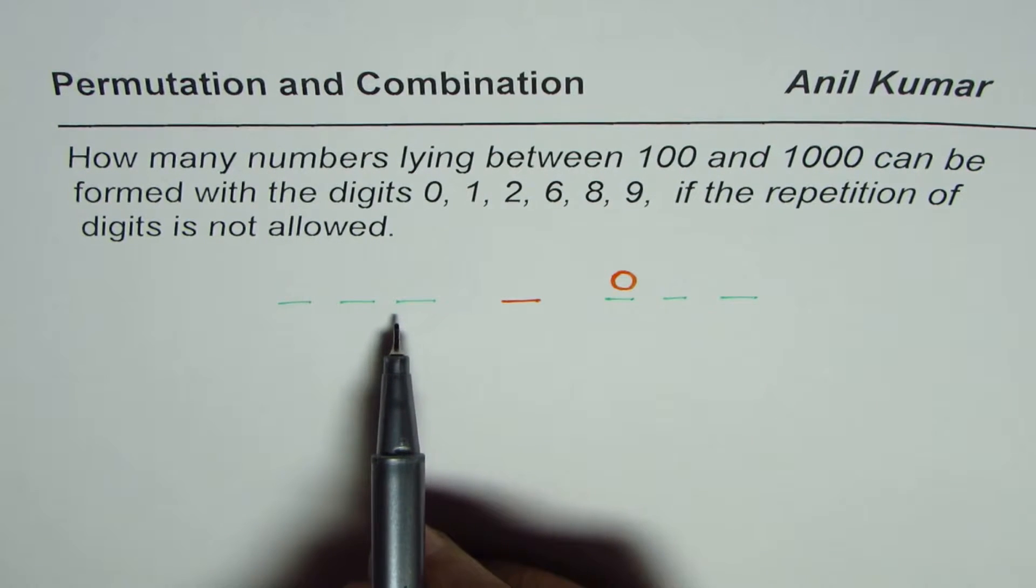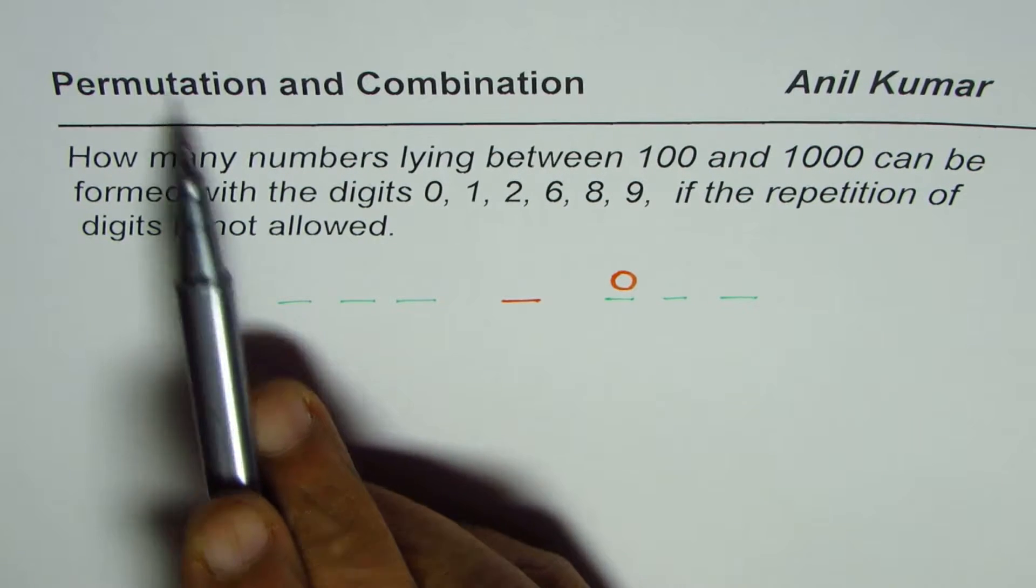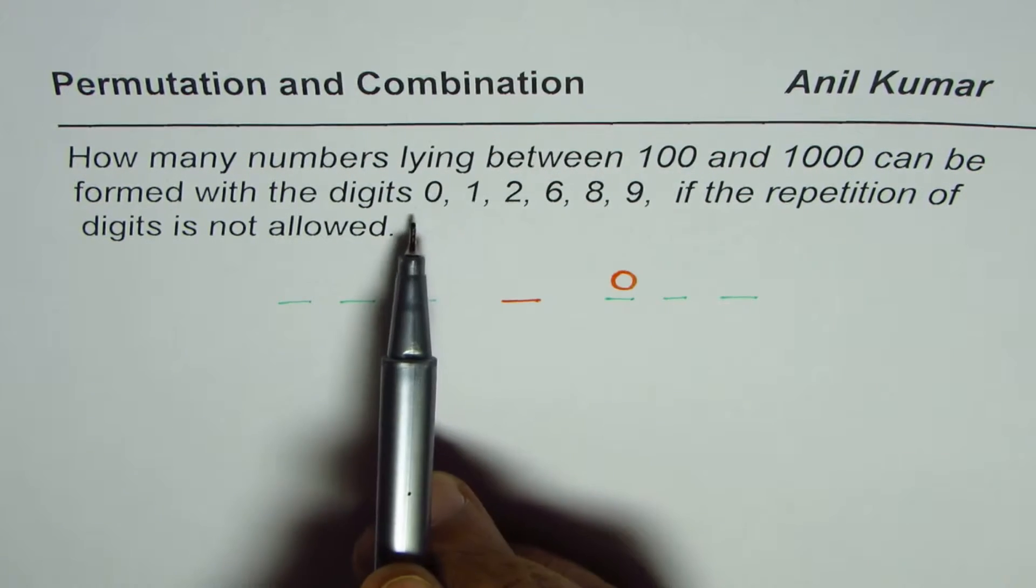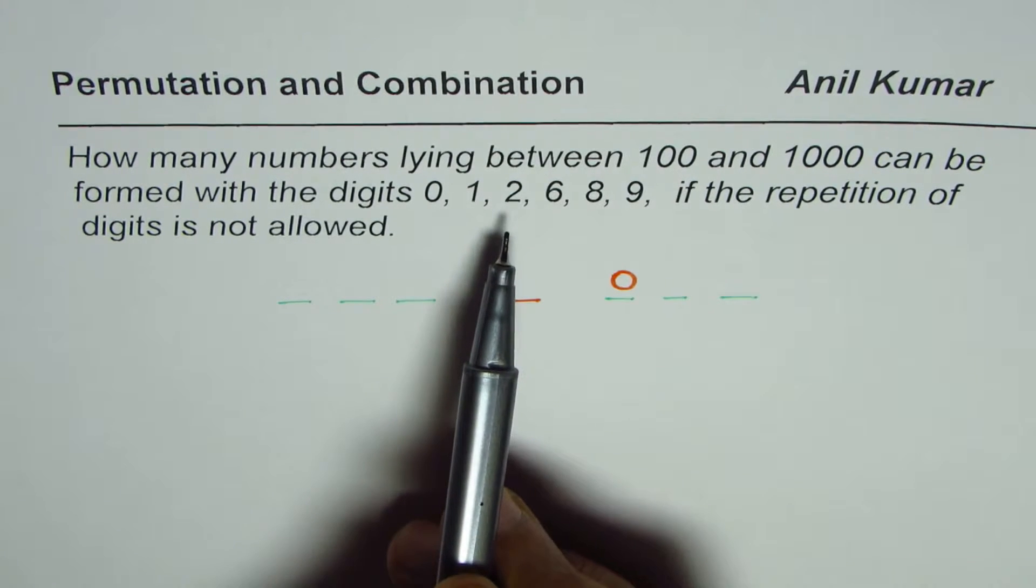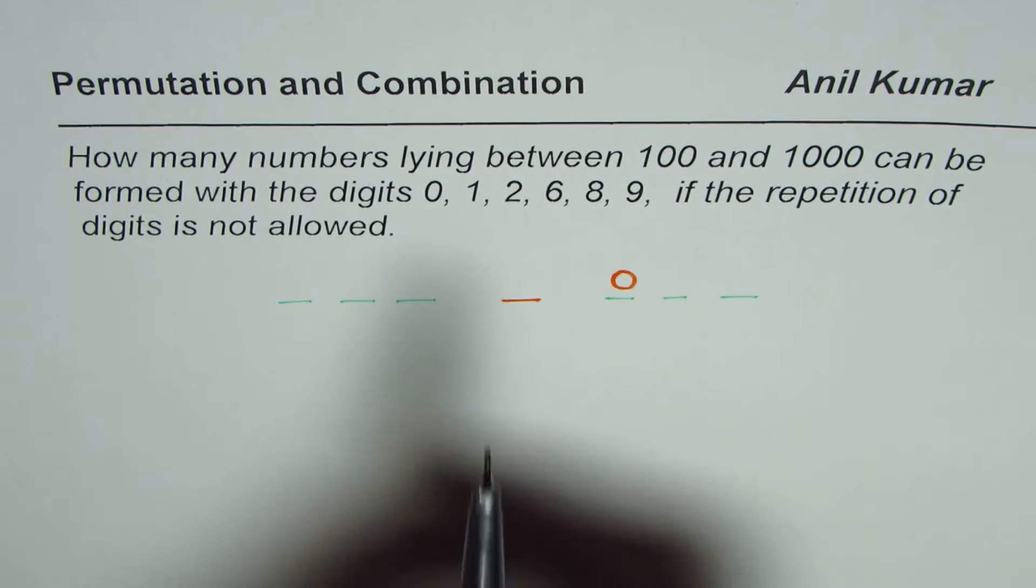So, we are looking into permutations in this case because these numbers are unique and distinct, and order matters. Therefore,